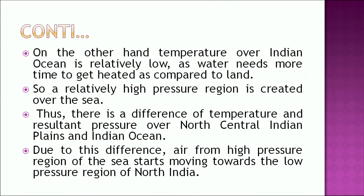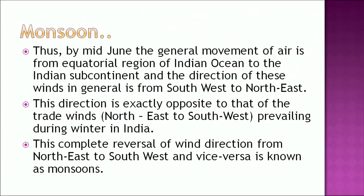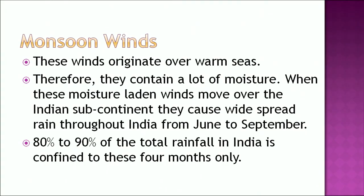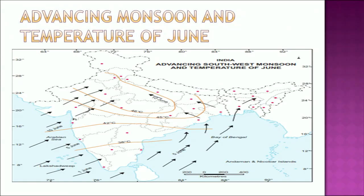Due to the difference in temperature and pressure over north-central Indian plains and the Indian Ocean, air from the high pressure region of the sea starts moving towards the low pressure region of North India. By mid-June, the general movement of air is from the equatorial region of the Indian Ocean to the Indian subcontinent, with a direction from southwest to northeast. This is exactly opposite to the trade winds prevailing during winter. This complete reversal of wind direction is known as monsoons. These moisture-laden winds cause widespread rain throughout India from June to September, with 80 to 90 percent of total rainfall confined to these four months.